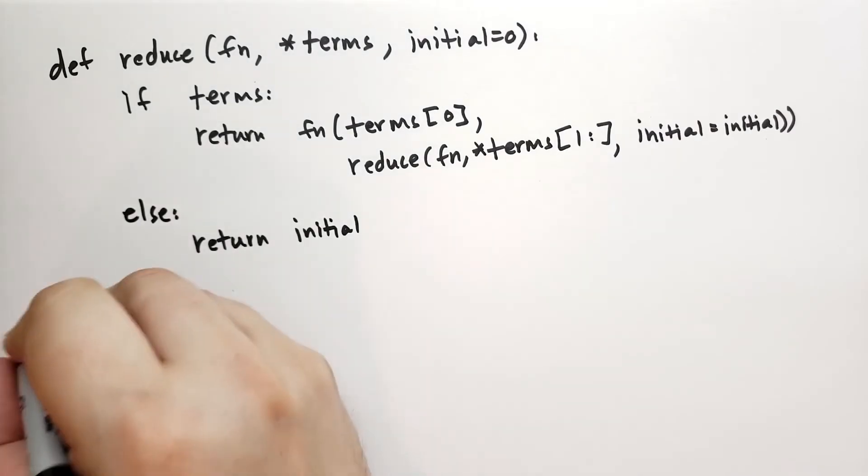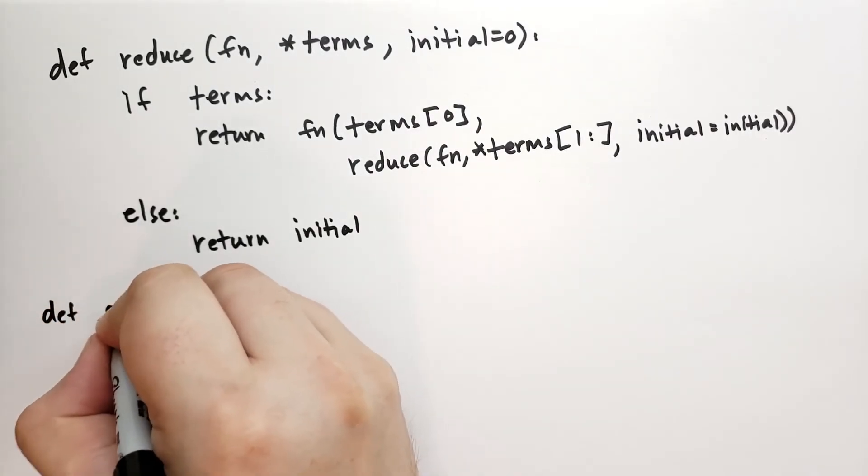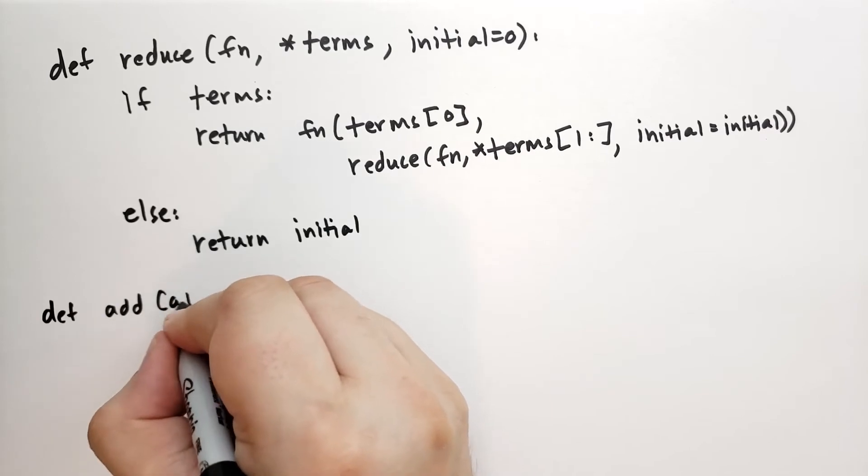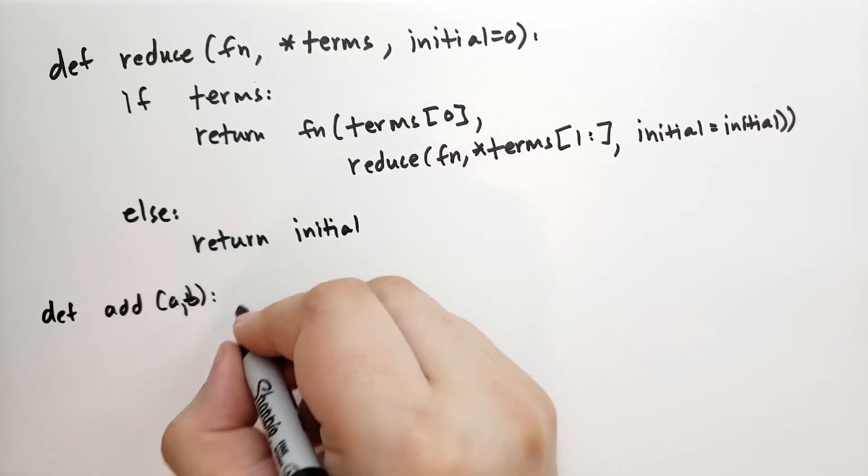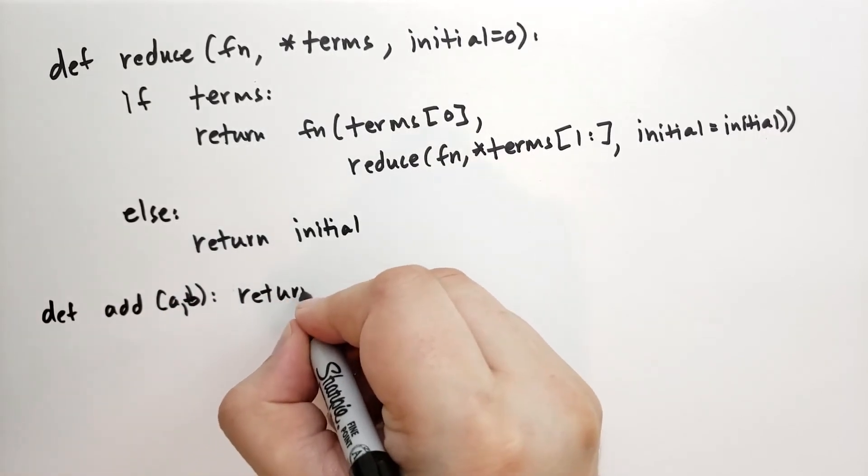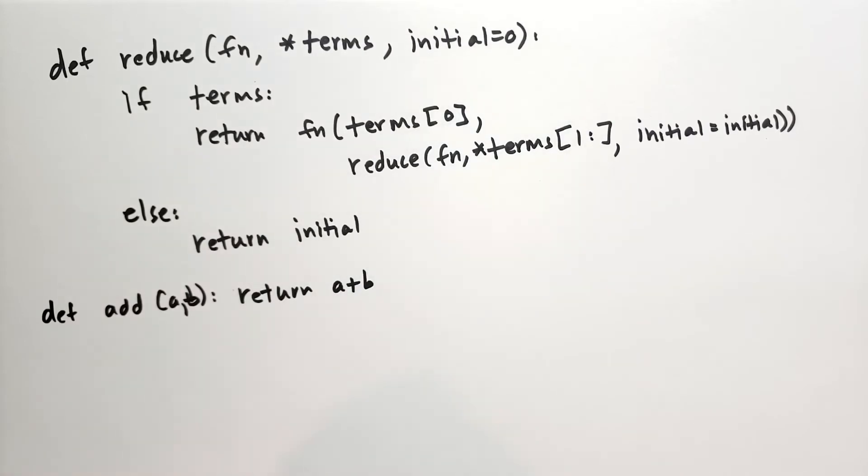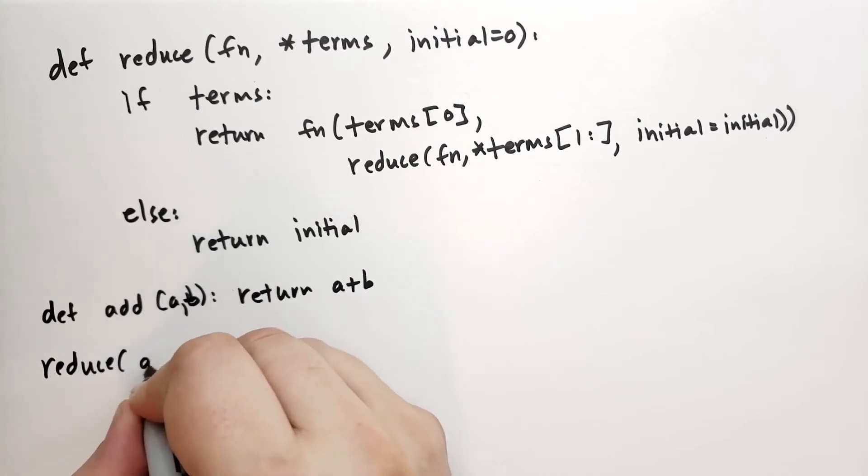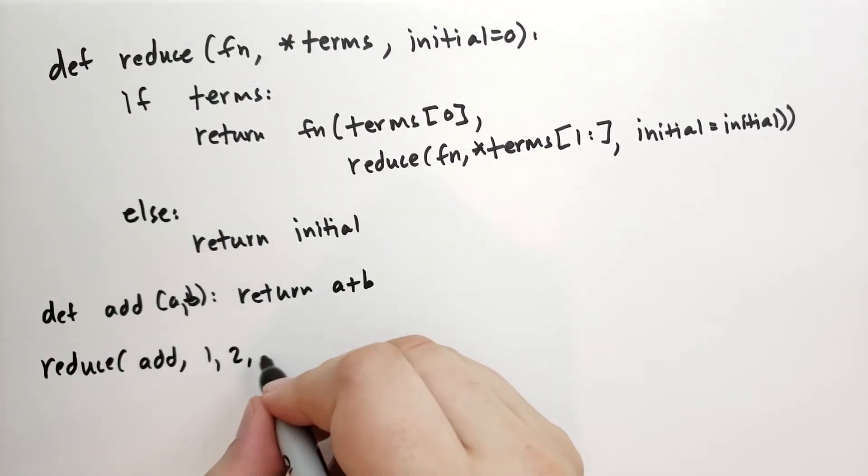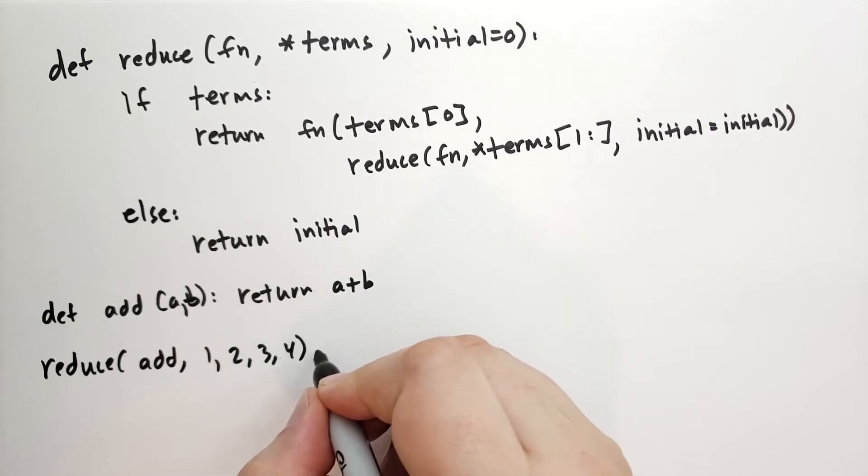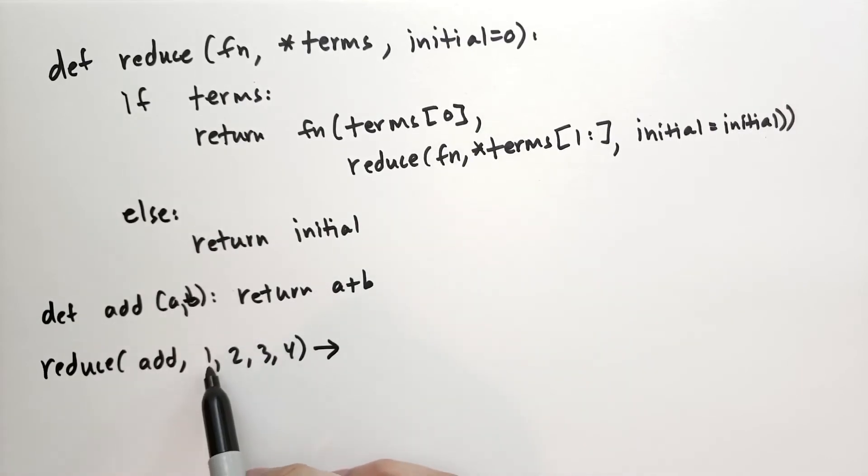So as an example, let's define add. I'm sorry, I'm getting ahead of myself. This is return a + b. And so let's see what happens if we reduce by adding the numbers 1, 2, 3, and 4. We expect that we should get back 10. But let's walk through this. So let's pull out my sticky notes.